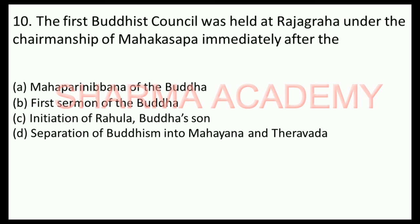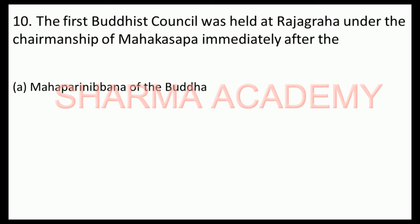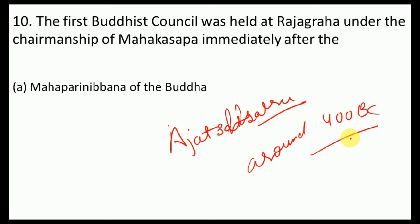The first Buddhist council was held at Rajgriha under the chairmanship of Mahakashyapa. The correct answer is it was held after the Mahaparinirvana of the Buddha, under the patronage of King Ajatashatru, around 400 BC. The main purpose was to ensure that the purity of Buddhist teachings was maintained after the death of the Buddha.